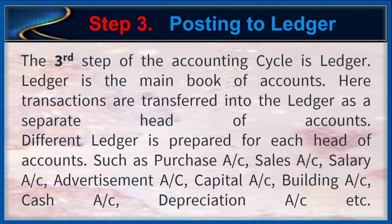Step 3: Posting the Ledger. The third step of the accounting cycle is ledgers. Ledger is the main book of accounts. Here, transactions are transferred into the ledger as a separate head of accounts. Different ledgers are prepared for each head of accounts, such as purchase account, sales account, salary account, advertisement account, capital account, building account, cash account, deposition accounts, etc.